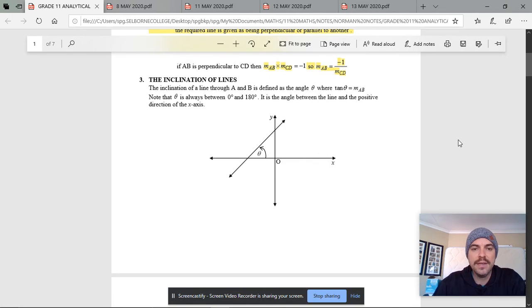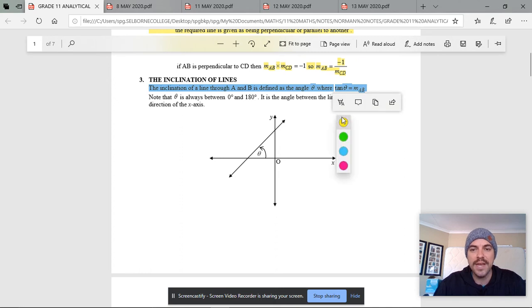This is new: the inclination of lines. The inclination of a line through A and B is defined as the angle theta where tan theta equals the gradient of the line AB. In this diagram, you'll see that theta is the angle that goes from the x-axis and meets the line. Simply all you need to do to work out that theta is say tan theta equals the gradient of that line. That line looks like it could be a gradient of one, so you'd say tan theta equals one, shift tan one equals, and then theta would be 45 in this case.